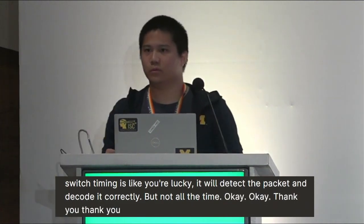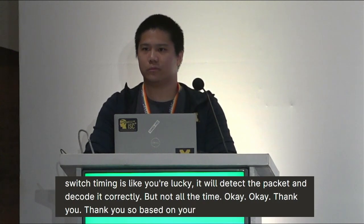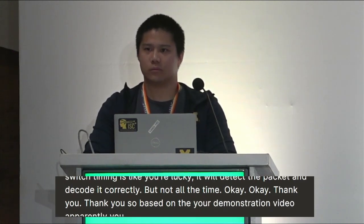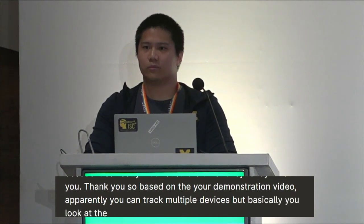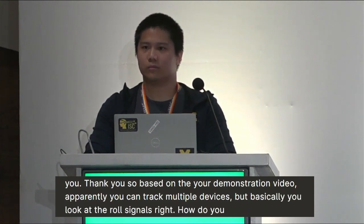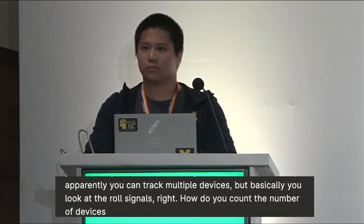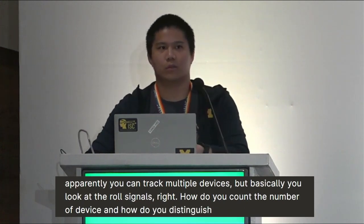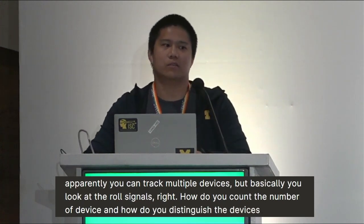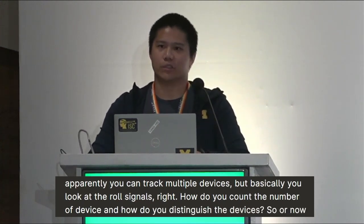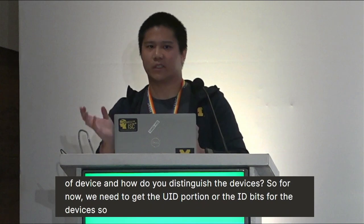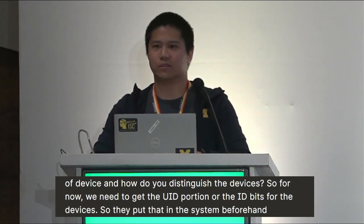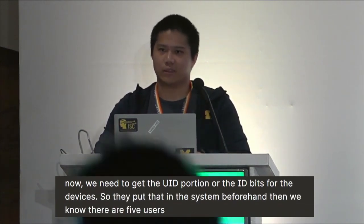Question: Based on your demonstration video, you can track multiple devices — but looking at raw signals, how do you count and distinguish the devices? Answer: For now, we need to get the UID portion — the identification bits for each device. We put that information in the system beforehand, so we know there are five users inside.